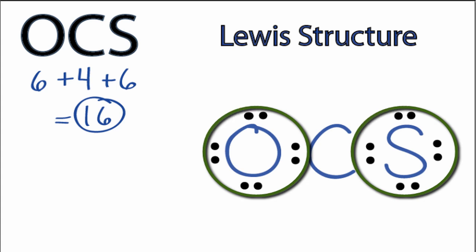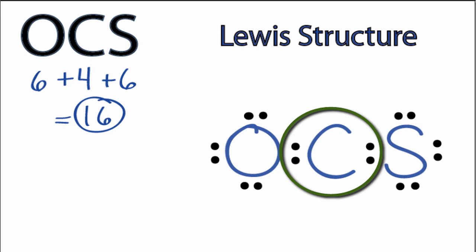The sulfur and the oxygen both have eight valence electrons, so their octets are full, but the carbon in the center only has four valence electrons.